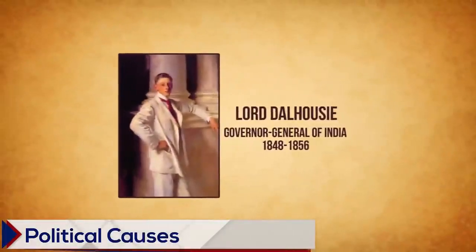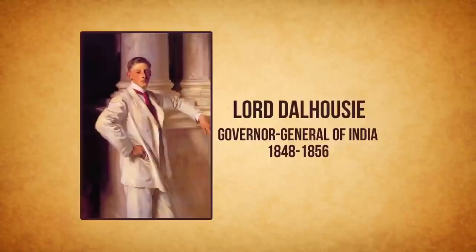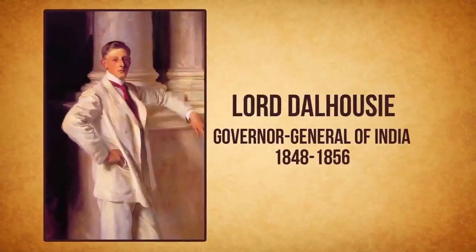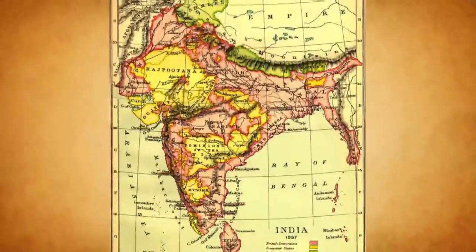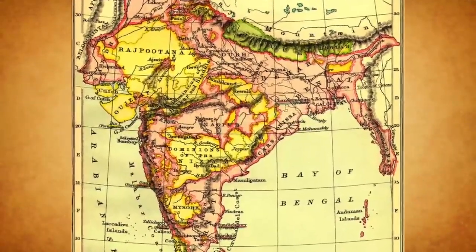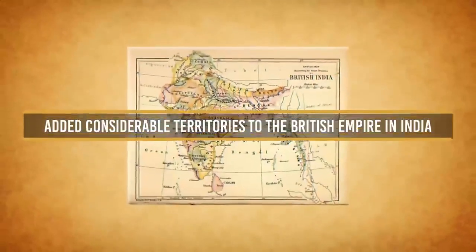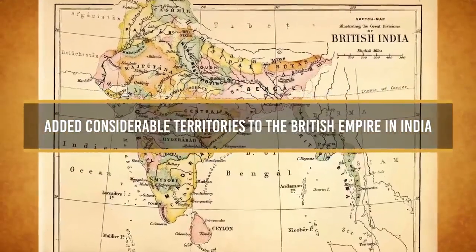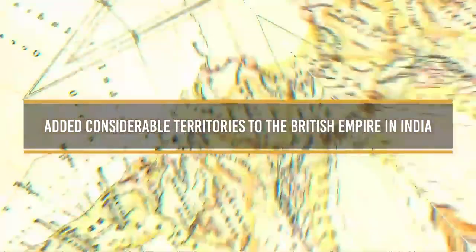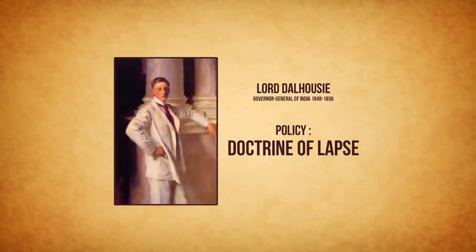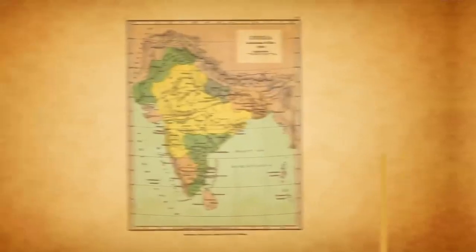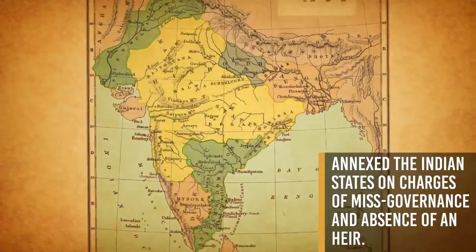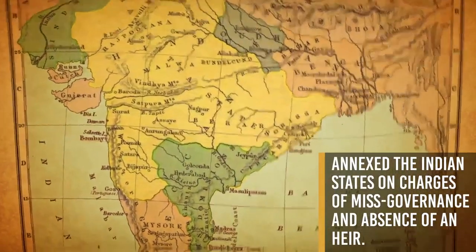Causes of the Revolt. Political Causes: Lord Dalhousie was the Governor General of India from 1848 to 1856. Under him the British followed an expansionist policy in India. Dalhousie, through his policies, had added considerable territories to the British Empire in India. The policy of annexation reached its climax when he implemented the Doctrine of Lapse and annexed Indian states on charges of misgovernance and absence of an heir.